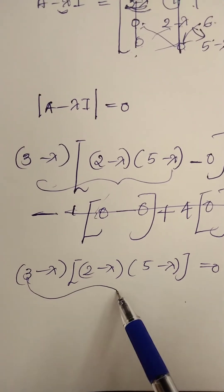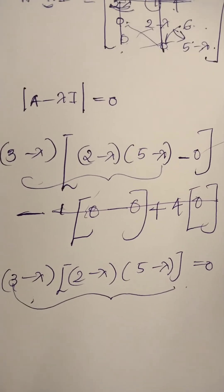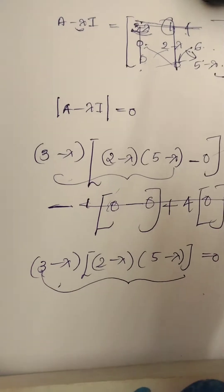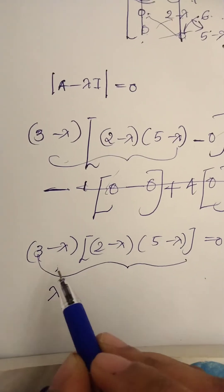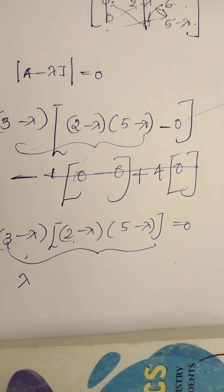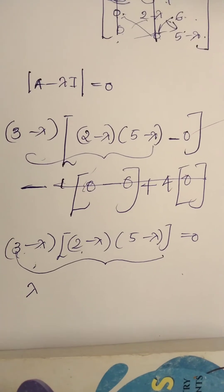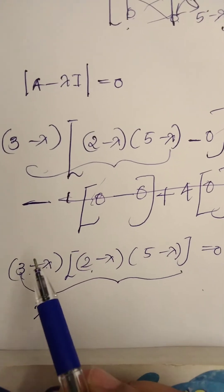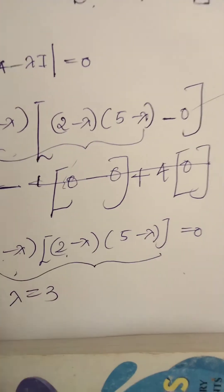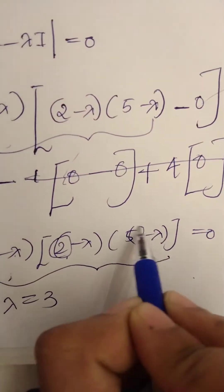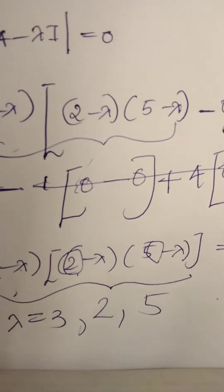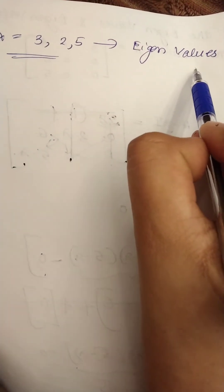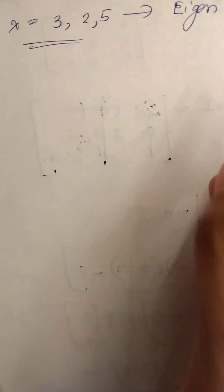So we have 3 minus lambda into 2 minus lambda into 5 minus lambda equal to 0. This gives us the simplest formula. Setting each factor to zero: 3 minus lambda equals 0, 2 minus lambda equals 0, or 5 minus lambda equals 0. That means lambda equals 3, lambda equals 2, and lambda equals 5.